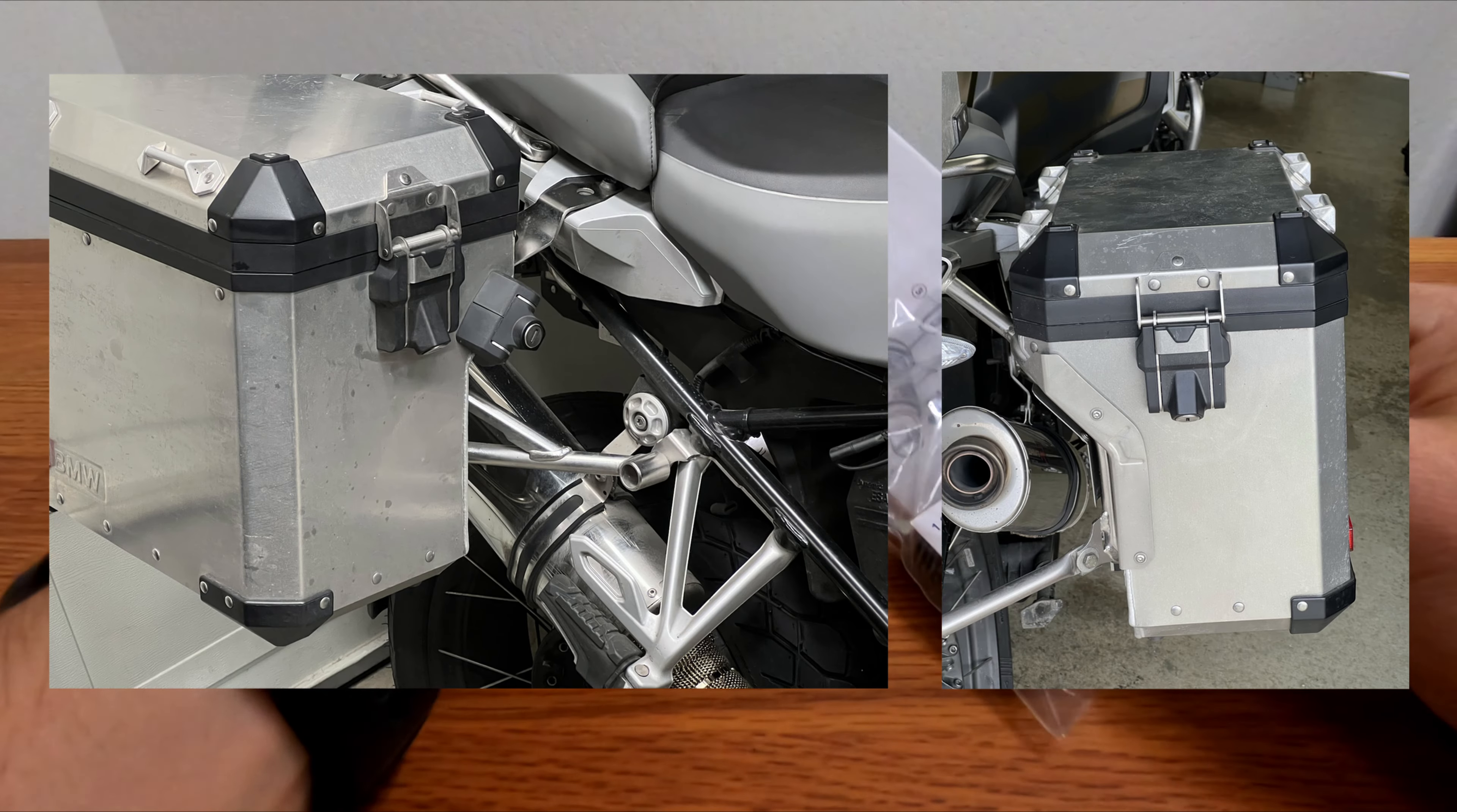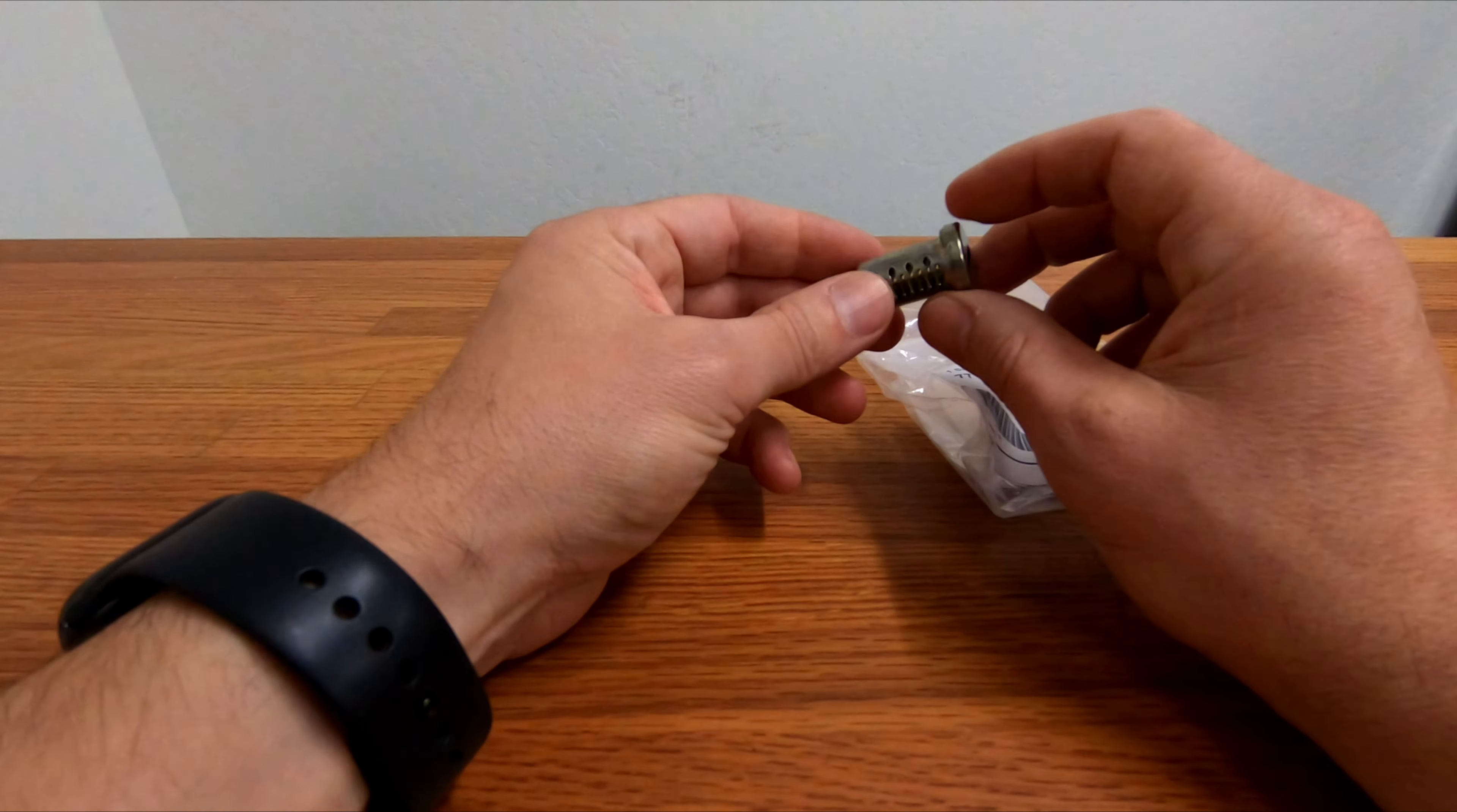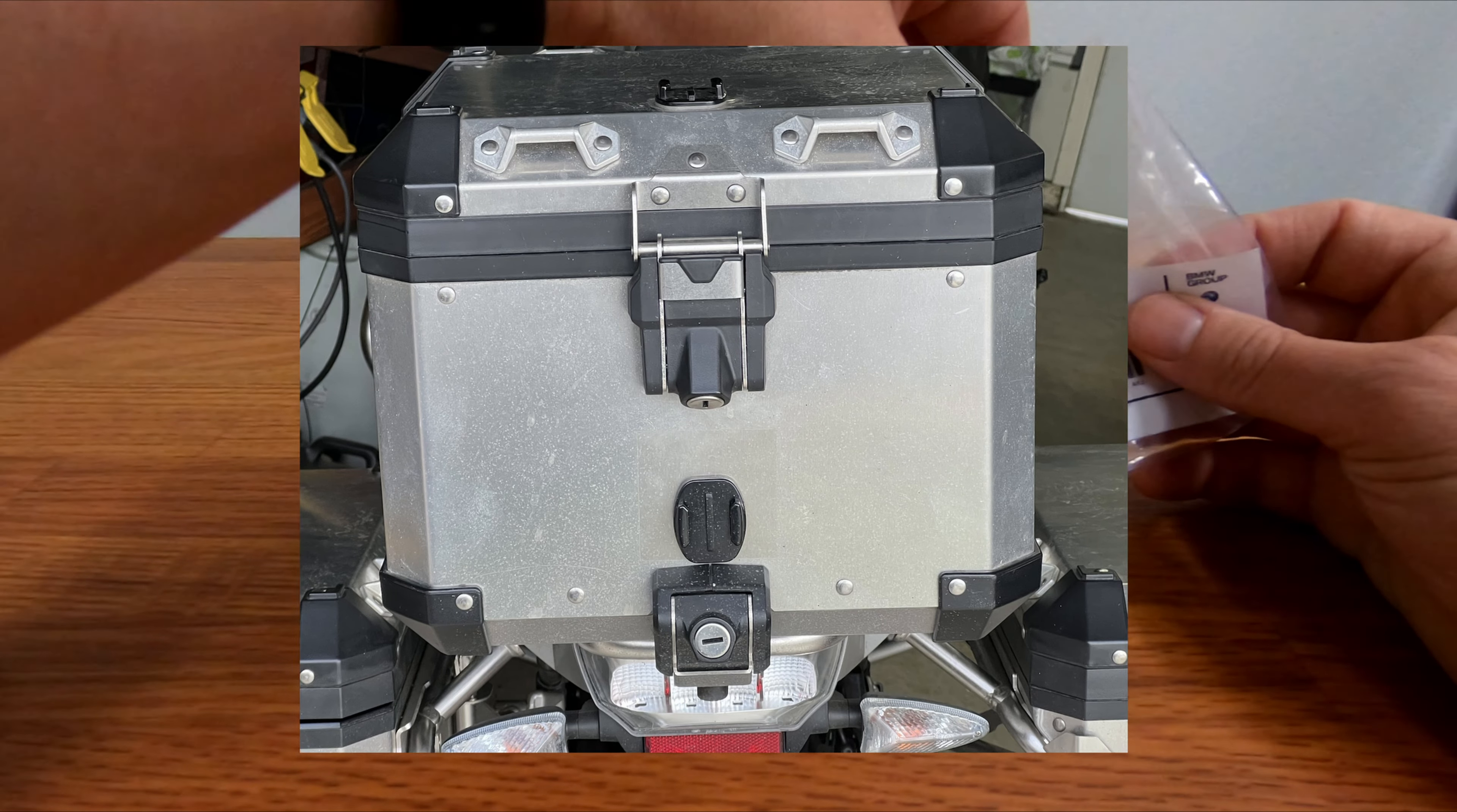Each side case has three tumblers, so both side cases is six and the top case has two, all the same part number.